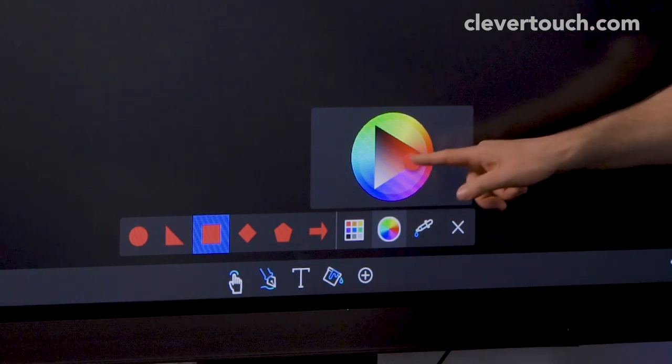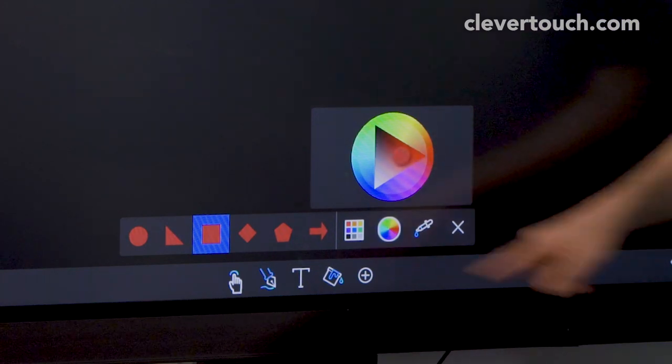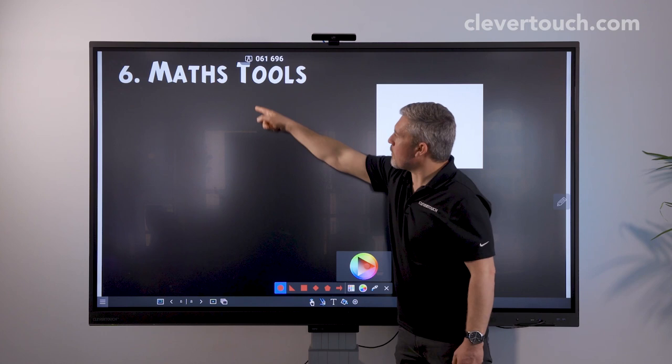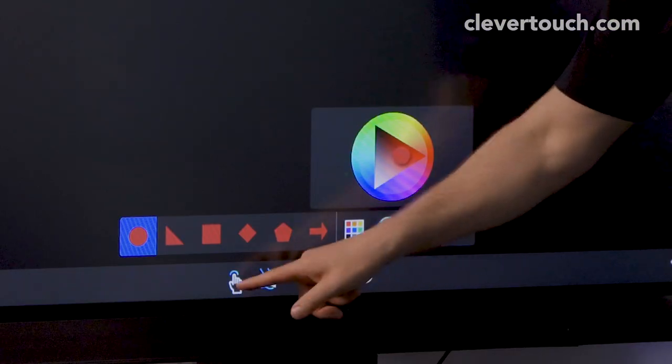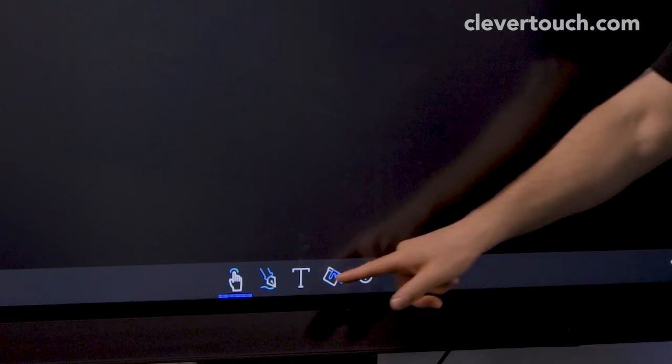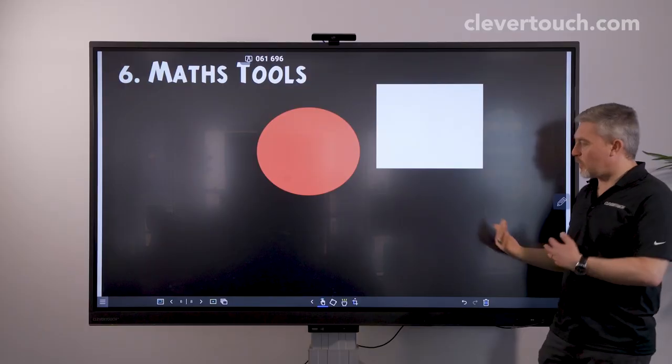I can even go into the colour wheel and we can adjust that slightly. So let's try that with a circle there.